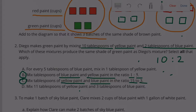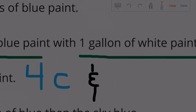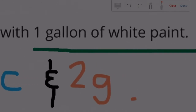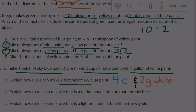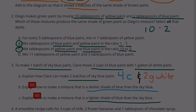Problem 3: To make one batch of blue sky paint, Claire mixes two cups of blue paint with one gallon of white paint. Part A: To make two batches, just double each ingredient. Two cups of blue becomes four cups, and one gallon of white becomes two gallons. So you need four cups of blue and two gallons of white.